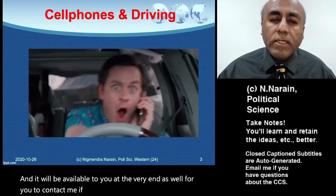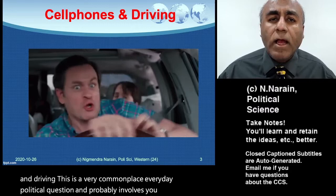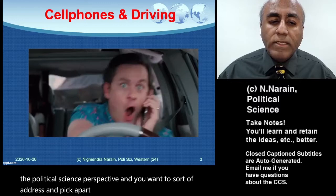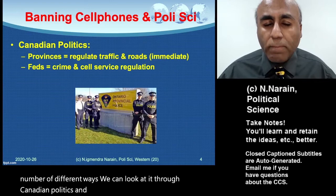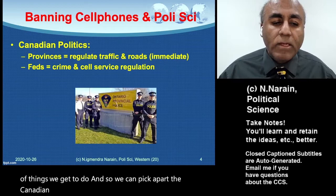Let's start to look at the issue itself of cell phones and driving. This is a very commonplace, everyday political question, and probably involves you and family members and others in debates about what is the appropriate thing to do. From a political science perspective, we can look at it through Canadian politics and ask ourselves who gets to regulate what — what powers are given to the different levels of government, and who gets to decide.